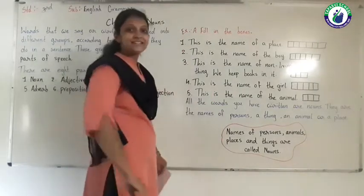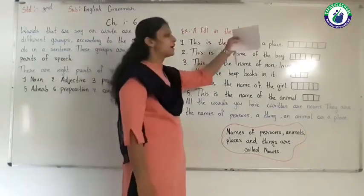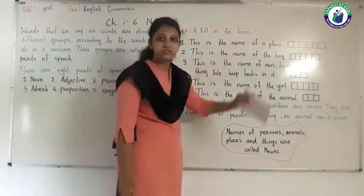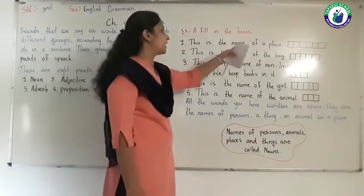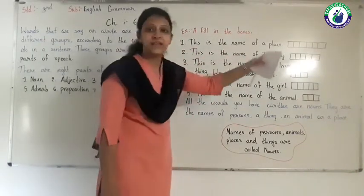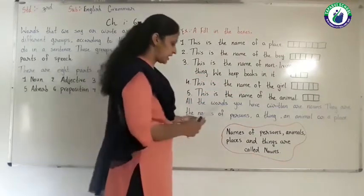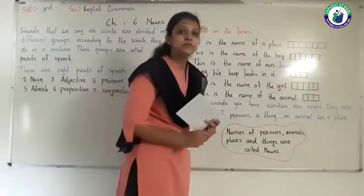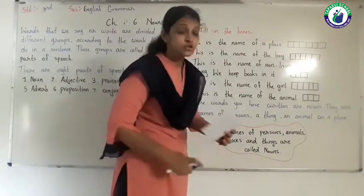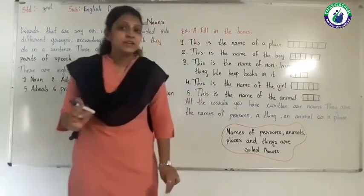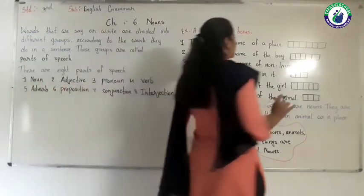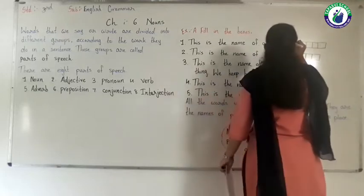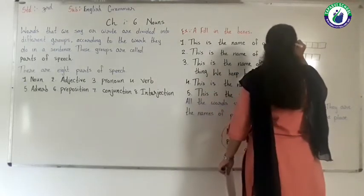Let's see exercise A — fill in the boxes. Number 1: this is the name of a place. So here we have to write the name of a place. I write the spelling of school.